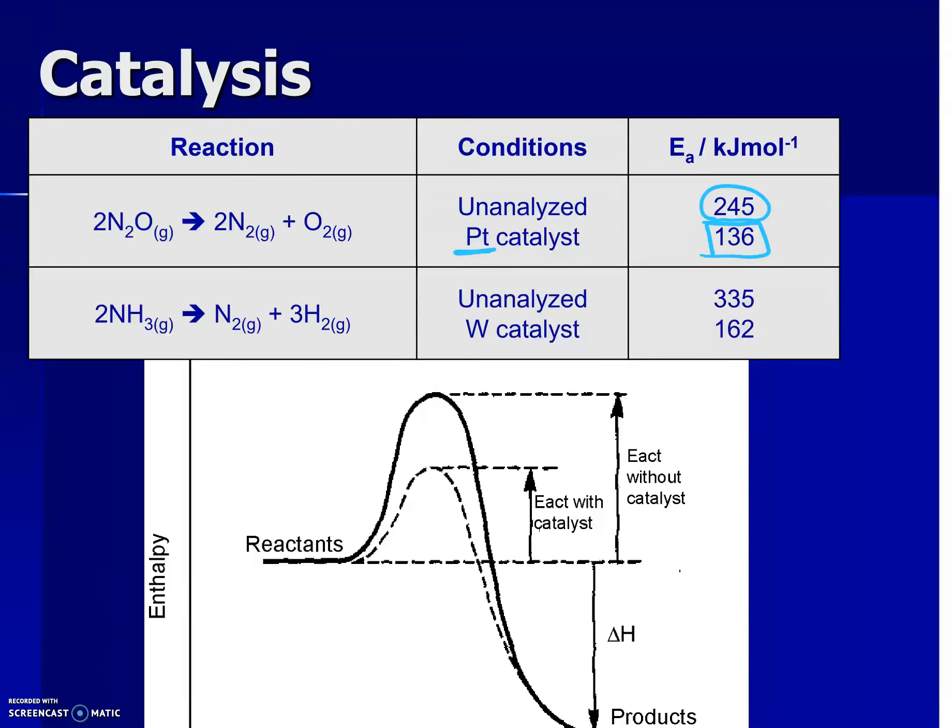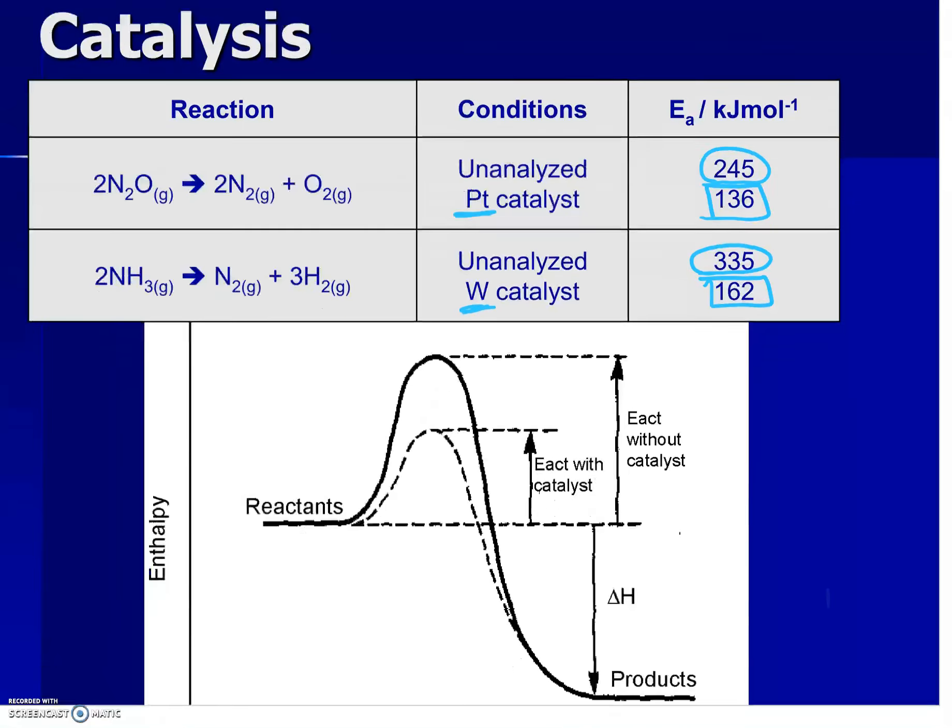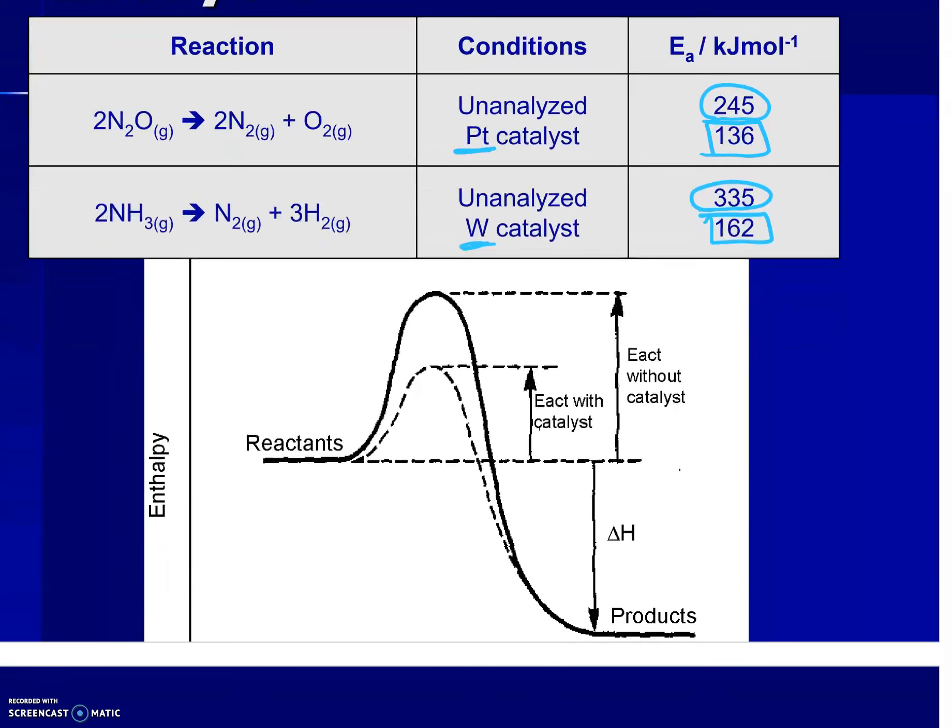If we take another decomposition reaction, ammonia breaks down into nitrogen and hydrogen. Without a catalyst being added, it takes 335 kilojoules of energy. Whereas if we add a catalyst, tungsten to this reaction, notice once again, it's not written in the reaction. It's just there to lower the activation energy. And if you look at the graph, this is if you do not have a catalyst versus if you do have a catalyst. Lowers the activation energy, and that's the goal of the catalyst.